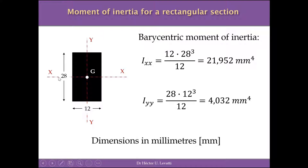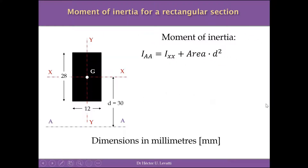This is the barycentric moment of inertia because it's referred to the barycentric axis. Of course, you can also calculate the moment of inertia about any other axis. For example, to find the moment of inertia about axis AA, you still need the barycentric moment of inertia first, because by definition the moment of inertia about a new axis parallel to axis XX equals the barycentric moment of inertia about X plus the area multiplied by the square of the distance between the two axes.